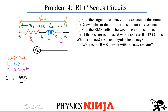Here's our RLC circuit. Again, everything is in series. My resistance is 250 ohms. The inductor has an inductance of 0.8 henry. Capacitance is 2.22 microfarad. And our voltage source has an RMS voltage of 440 volts.